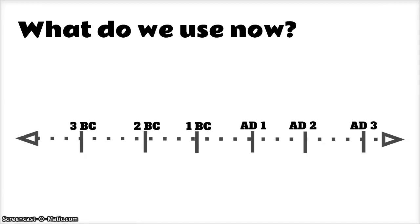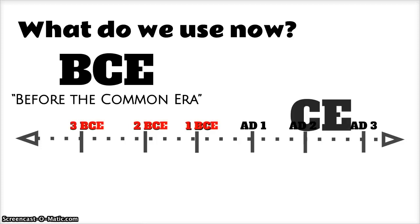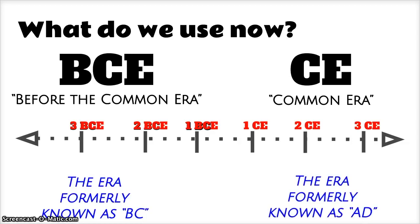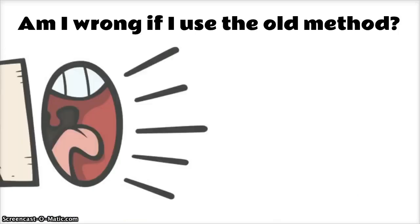So what do we use now? Since the later part of the 20th century, the use of BCE and CE have been popularized. Authors who wanted a more secular approach to writing began referring to the years formerly known as Before Christ as BCE, which stands for Before the Common Era. The years formerly known as AD are now referred to as CE, which stands for the Common Era. More and more books and scholars are using these terms in their writings.